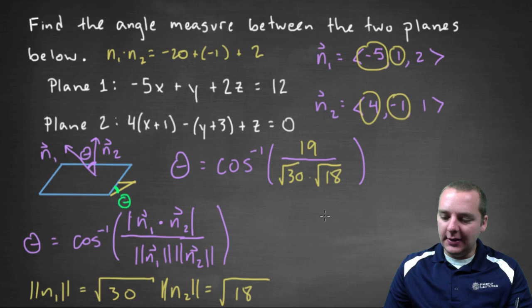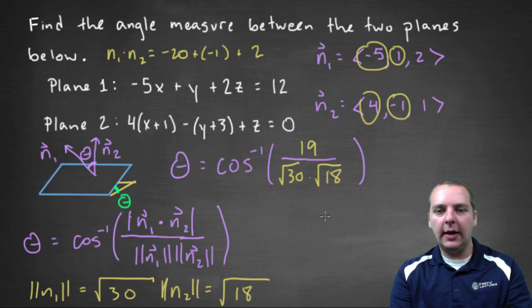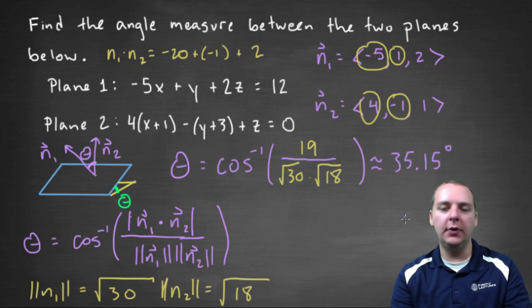Alright, make sure your calculator is in degree mode, which mine is. And be careful with your parentheses and all those good things. And we'll take the arc cosine of nineteen, over square root of thirty, times the square root of eighteen. Again, make sure all your parentheses are good. Alright, and I got thirty-five point one five degrees. And of course that's an approximation. Thirty-five point one five degrees.